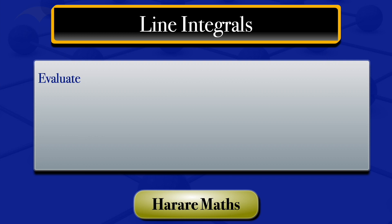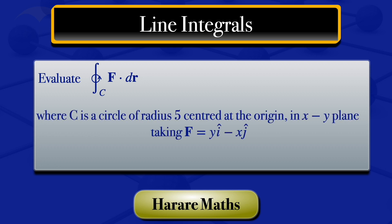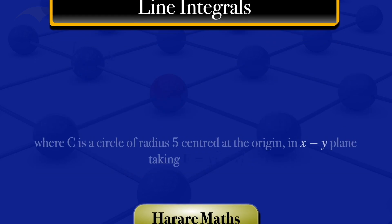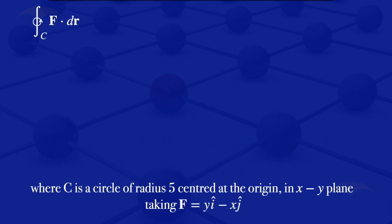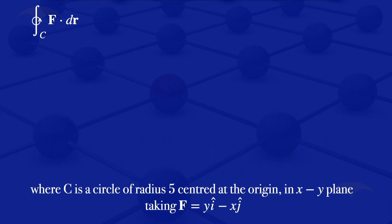In this video, I'm going to evaluate the integral of F·dr along the closed curve C in the positive direction, where C is a circle of radius 5 centered at the origin in the xy-plane, taking F equals yi minus xj. Given that information, we'll first look at what we are given: our F is yi minus xj.